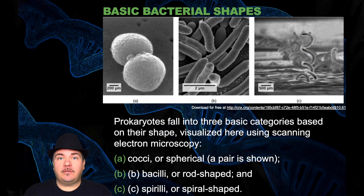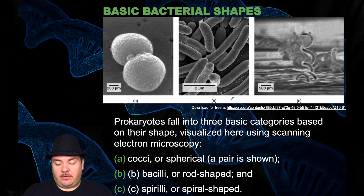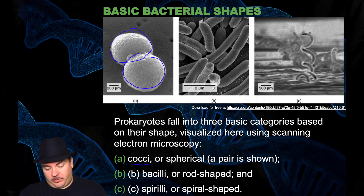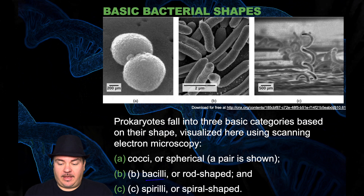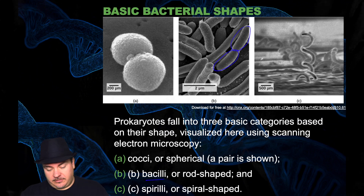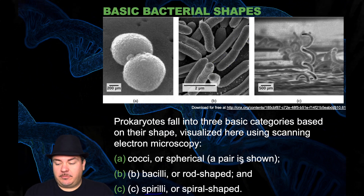Another thing to note about prokaryotes is they can come in different shapes. They fall into three basic categories. One is cocci, which is spherical — you can see individual bacteria cells here. Or they come in the shape bacilli, which is rod-shaped — you can see rod-shaped bacteria here, one attached to another. Or they have a spirilla shape, which is spiral, as you can see right there.